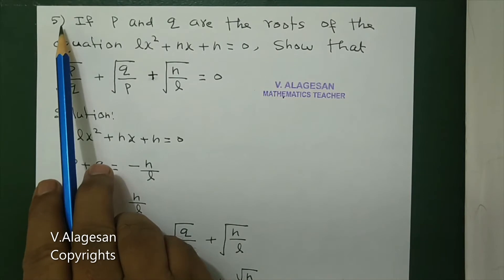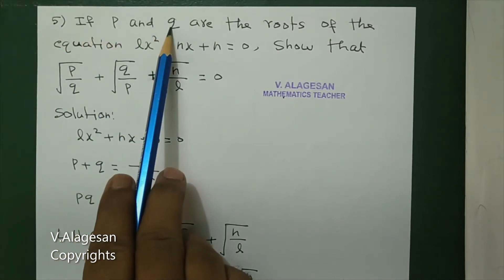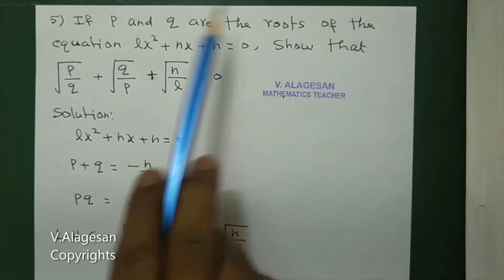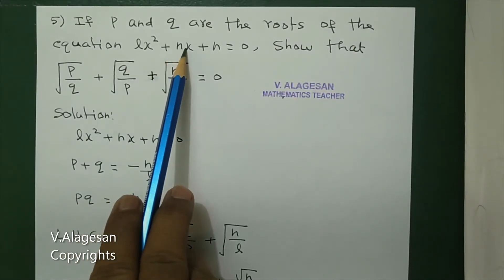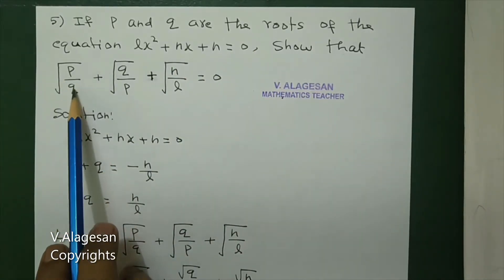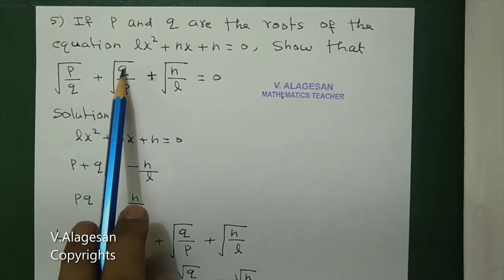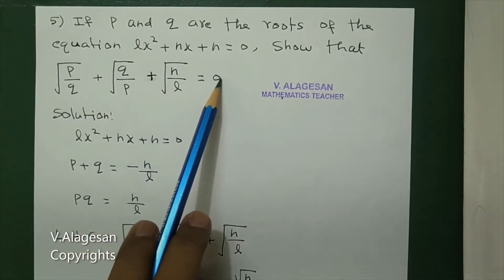Hi students, question number 5: If p and q are the roots of the equation lx² + nx + n = 0, show that √(p/q) + √(q/p) + √(n/l) = 0.